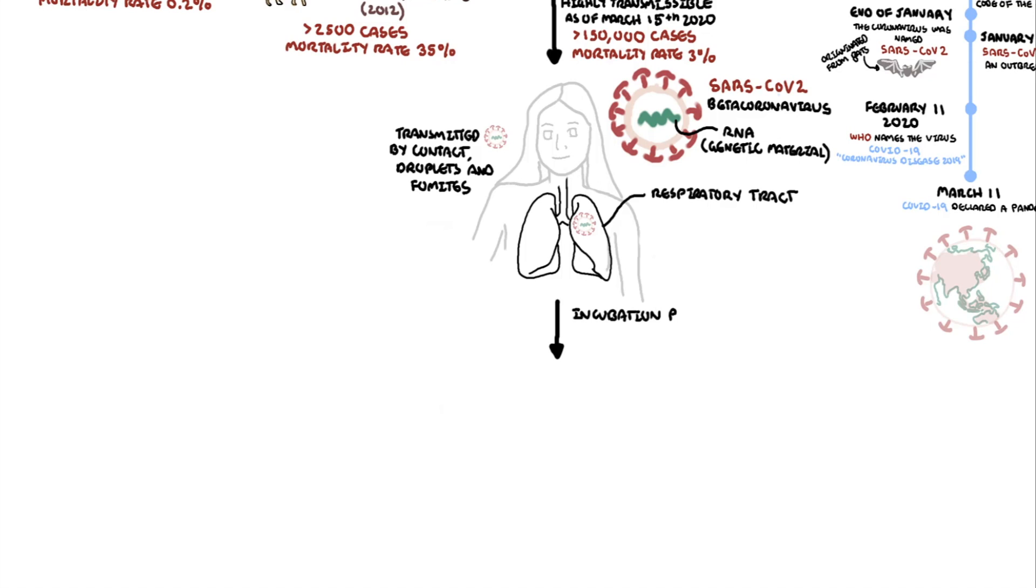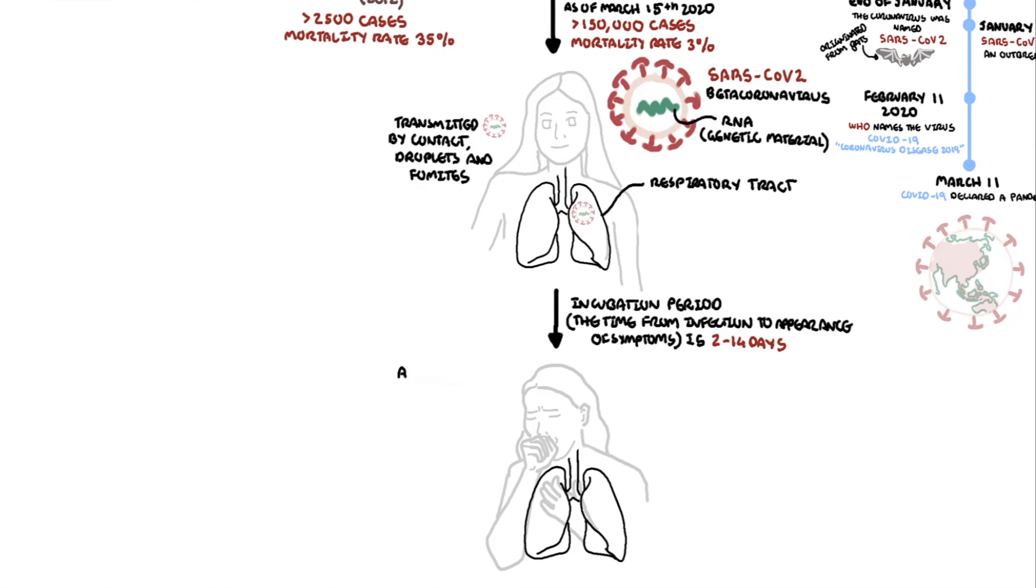The incubation period, the time from infection to appearance of symptoms, is about 2 to 14 days. The average age affected is 47 years old, and interestingly, children are rarely symptomatic. Both males and females are affected roughly equally. The classic symptoms of COVID-19 is a fever, dry cough, sore throat, and shortness of breath.